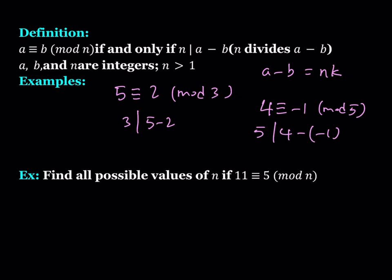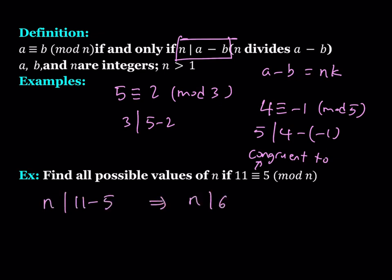Now let's take a look at this example — one of the first examples I go over when I teach modular arithmetic. Find all possible values of n if 11 is congruent to 5 mod n. In this case we don't know the modulus; we're trying to find it. We know that 11 is always congruent to 5, so we can use our formal definition. It means n divides 11 minus 5, which means n divides 6. And of course, n needs to be greater than 1 and it's going to be an integer.